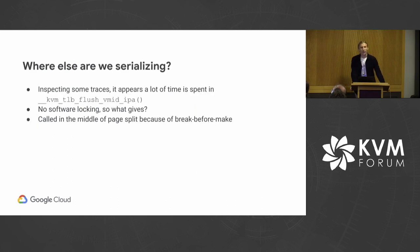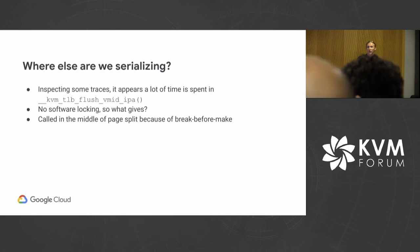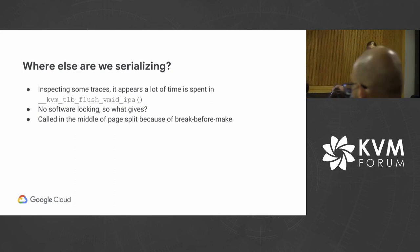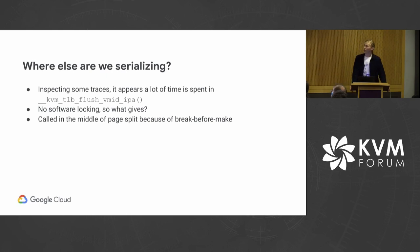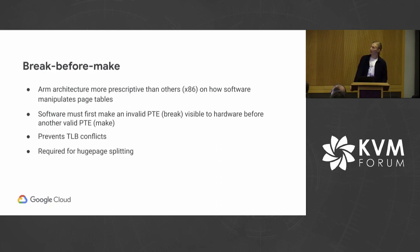After poking around in the kernel and looking at some traces, it looked like we were spending an inordinate amount of time doing TLB invalidations. We started picking away at this to understand what was going on. It didn't appear that there was any software locking. We actually have to call this in the middle of a page split because of the break before make requirements of the ARM architecture.